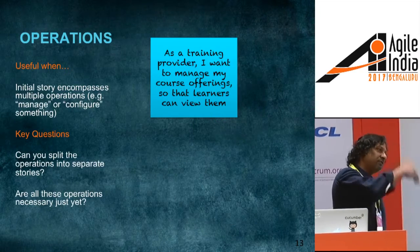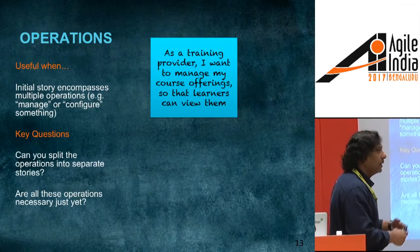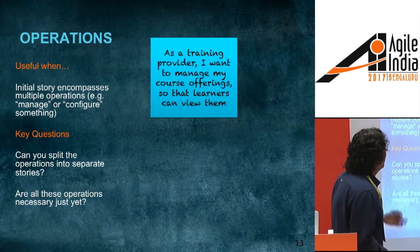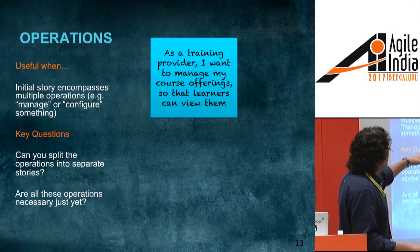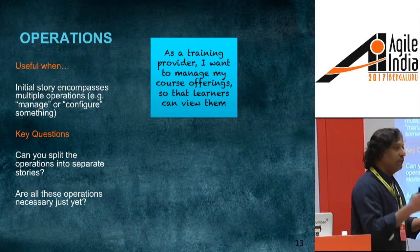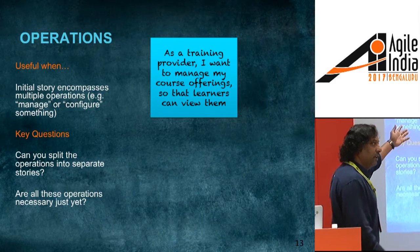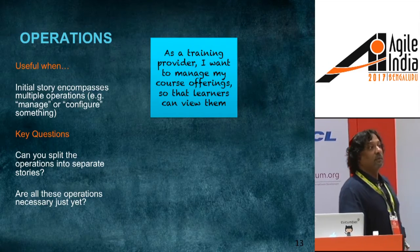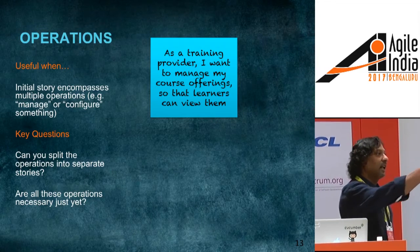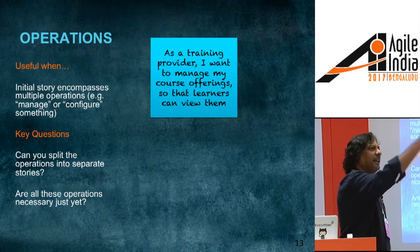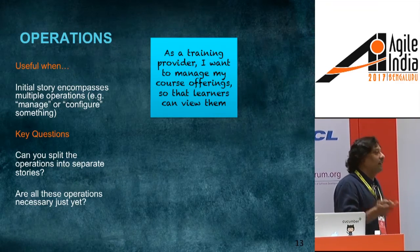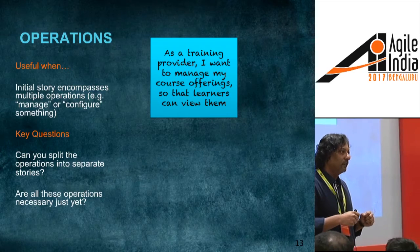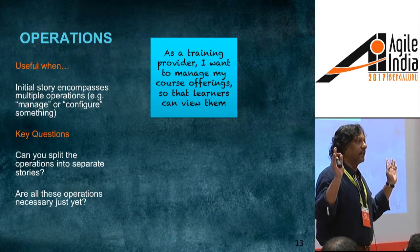The second strategy is breaking a story by operations. Example: as a training provider, I want to manage my course offerings so that learners can view them and sign up. What are the implicit operations? Creating classes, deleting, editing, searching. When you hear the word 'manage,' 'configure,' or 'administer,' you know you're doing multiple things. Break it down by operations.